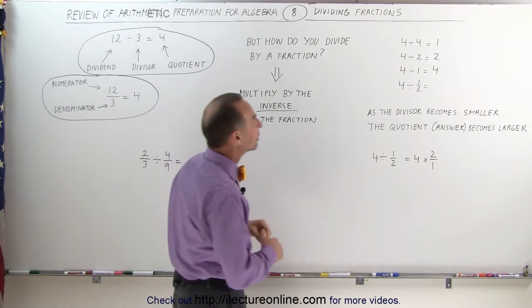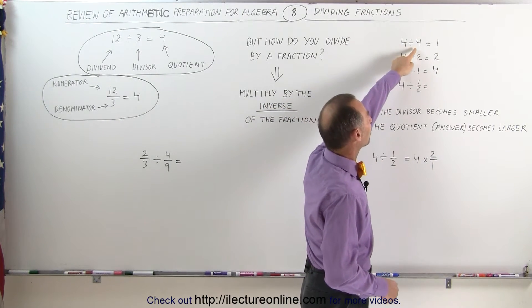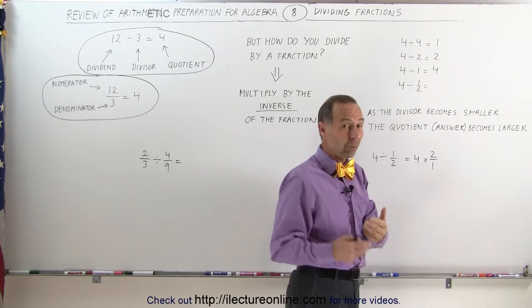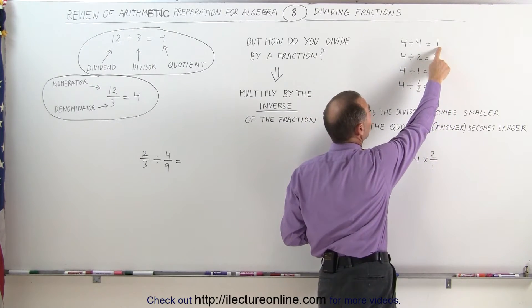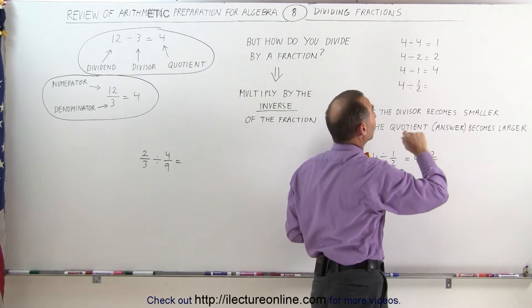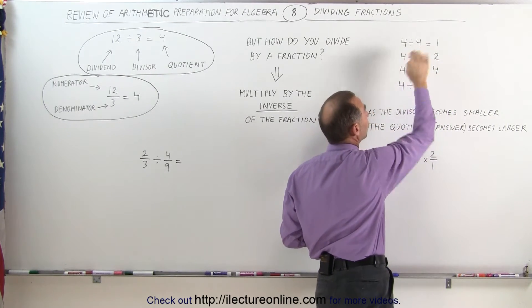Now let's walk over here and take a look at these numbers. Notice when you take the number 4, divide by 4, you get 1. The reason why that is true is because when you multiply the answer, the quotient, back with the divisor, you get the dividend back. So 1 times 4 equals 4, so you know that's correct.